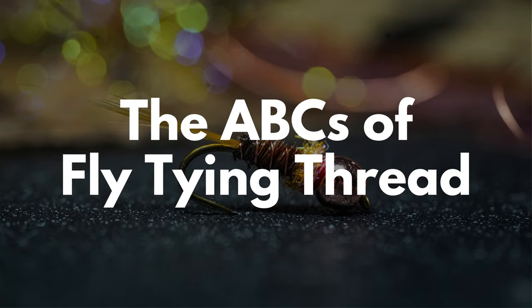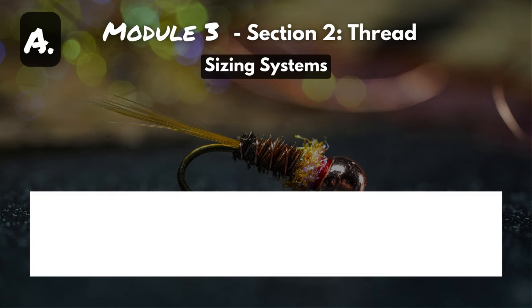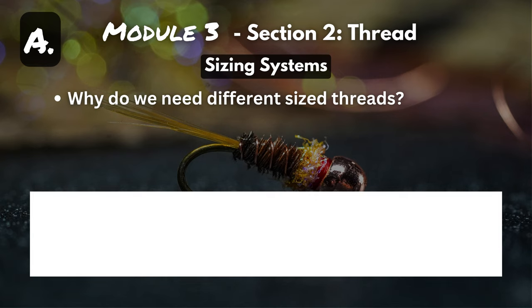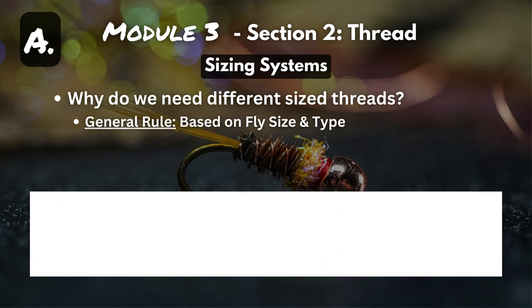So sit back, relax, and let's learn more about fly tying thread than you ever thought was possible. We're going to go through the ABCs of fly tying thread — A: sizing systems. To start off: why do we need different size threads? As a general rule, the size of thread you use is going to be based off the size and type of fly that you want to tie.